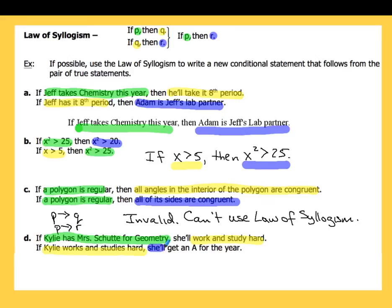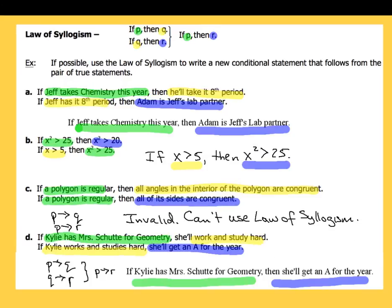If Kylie works and studies hard, then she'll get an A for the year — that's totally new. From a symbolic perspective: P implies Q for the first part, and then Q implies R for the second statement, which means my conclusion goes right from P to R. Our conclusion is: if Kylie has Mrs. Shuddy for geometry, then she'll get an A for the year. And just a little tidbit — Kylie is the name of one of my granddaughters.